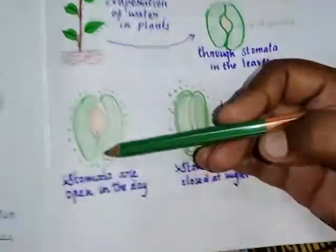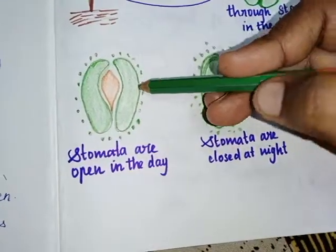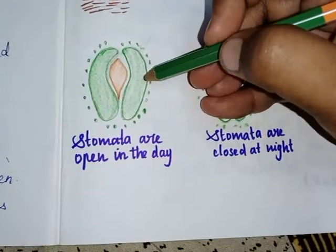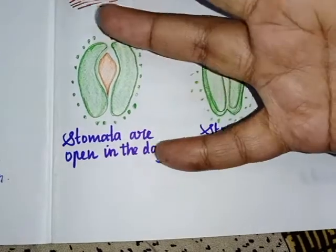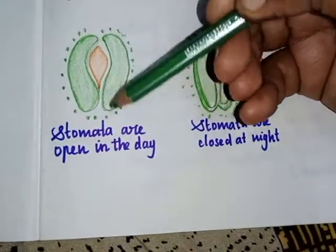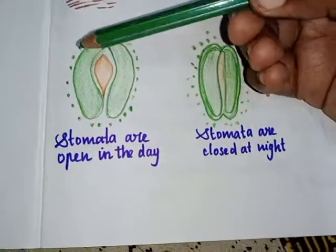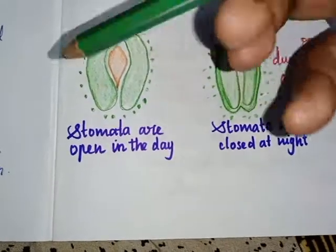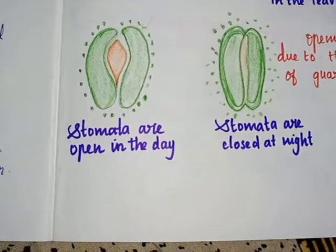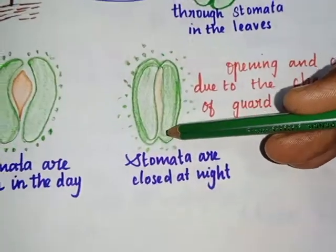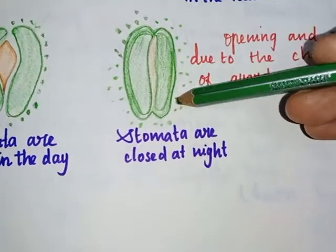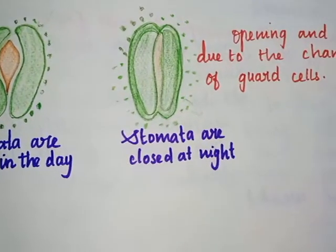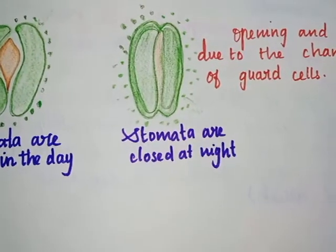When water enters into guard cells, they become turgid and stomata open. When the guard cells lose water, they become flaccid and the stomata close.